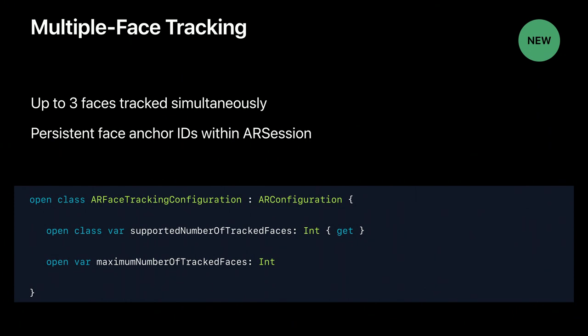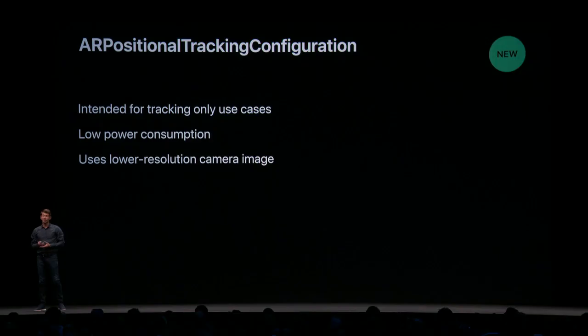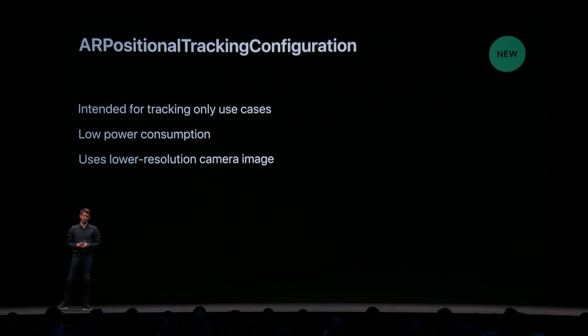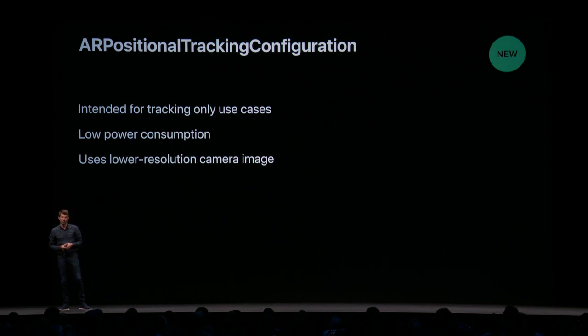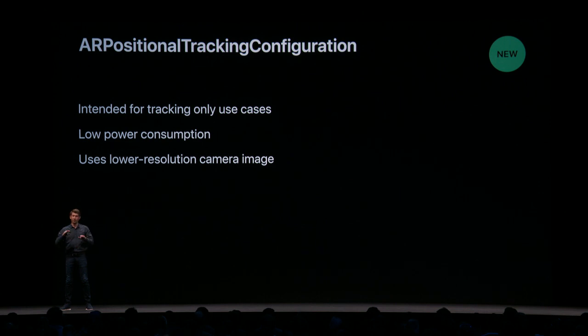Let's talk about a new tracking configuration called ARPositionalTrackingConfiguration. This new configuration is intended for tracking-only use cases — for when you don't need the camera backdrop to be rendered. We can achieve low power consumption with the ability to lower the capture frame rate and also the camera resolution while still keeping your rendering rate at 60 Hz.